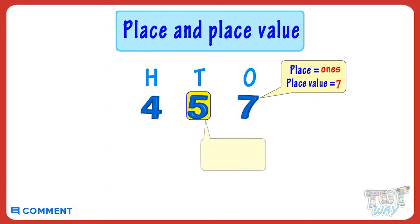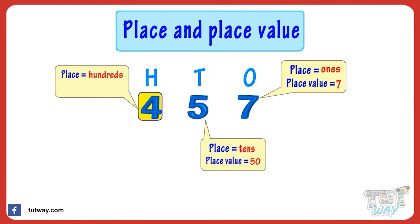Place of five is tens, place value is five tens, that is fifty. Place of four is hundreds, place value of four is four hundred.